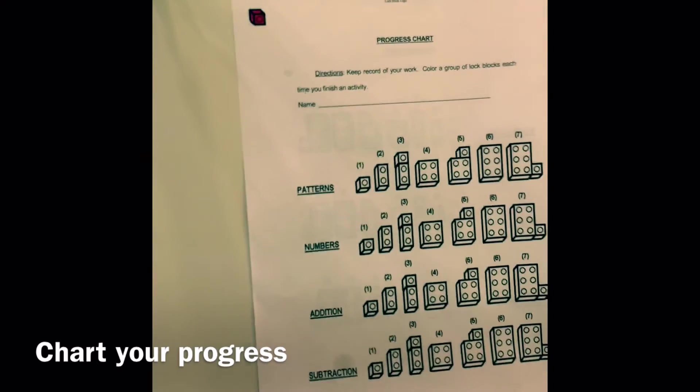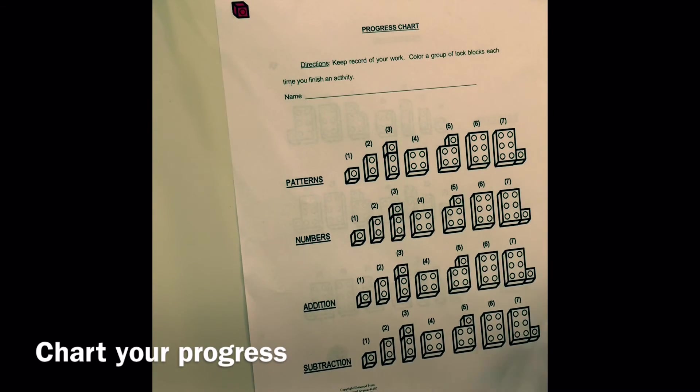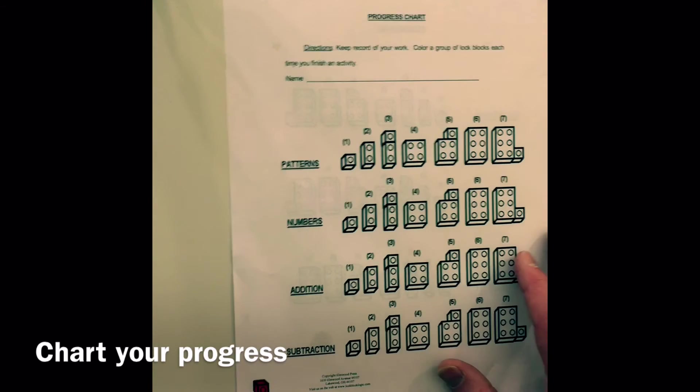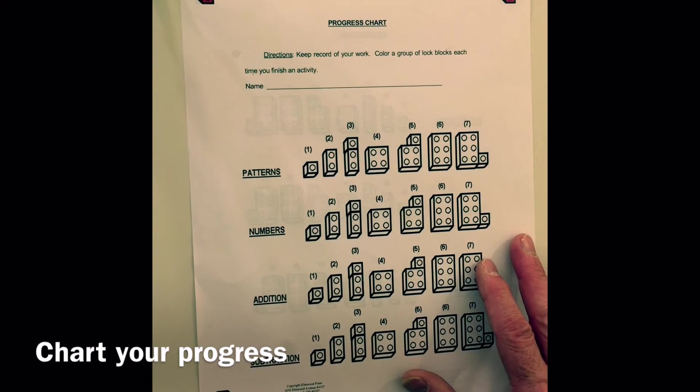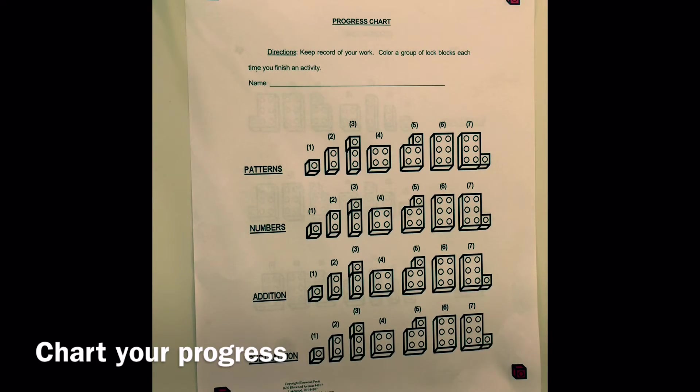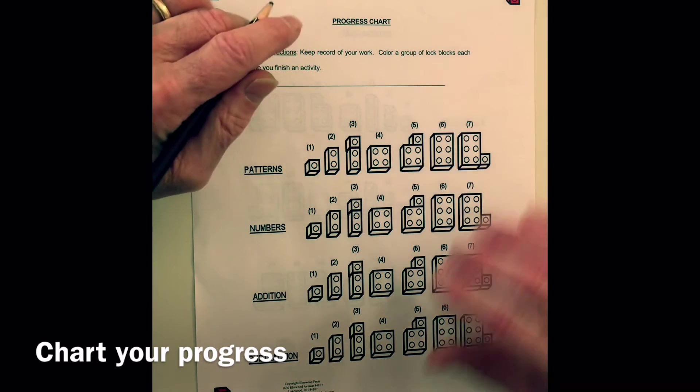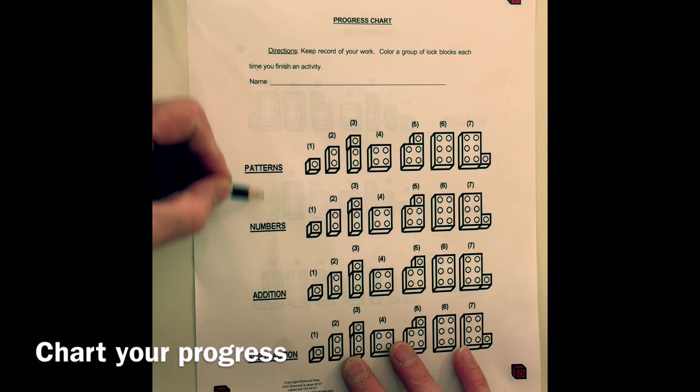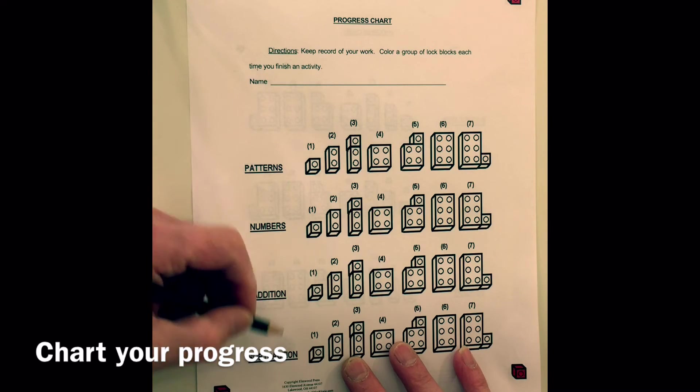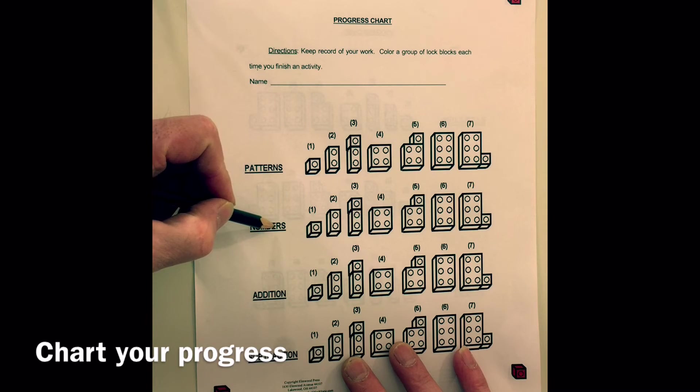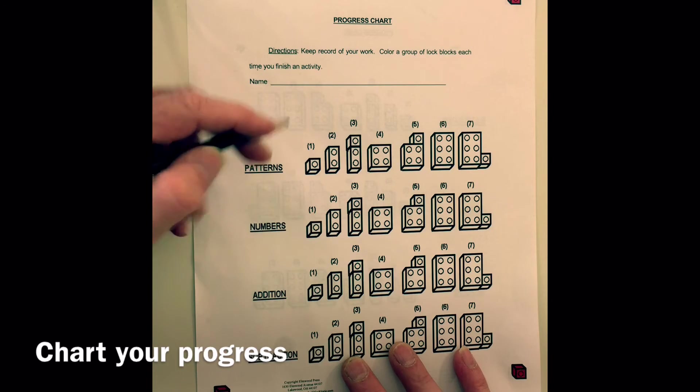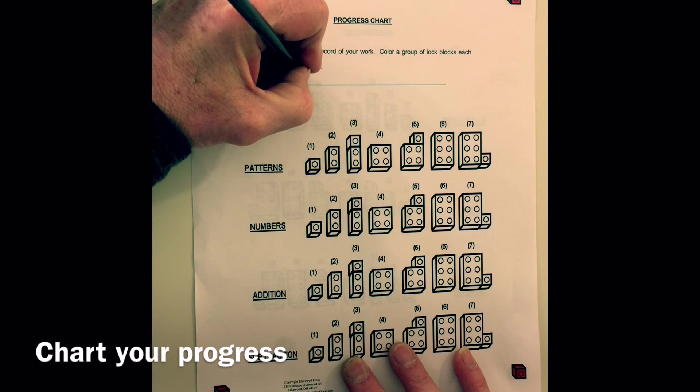Mark our progress chart. So there's a progress chart on the website that you can download. This is what it looks like. This will help you keep track of which activities you've done. You can see there's patterns, numbers, addition, subtraction.